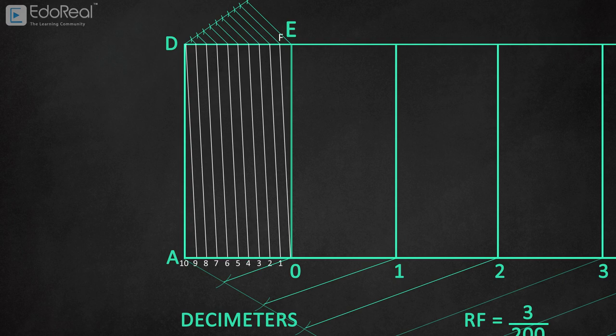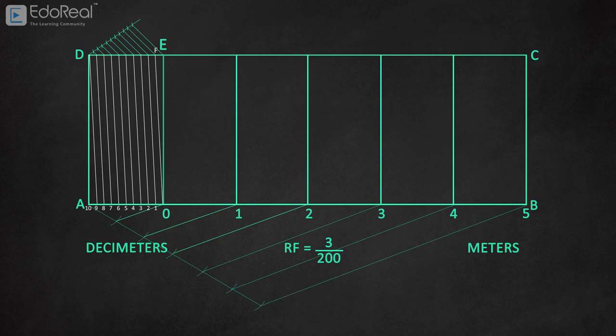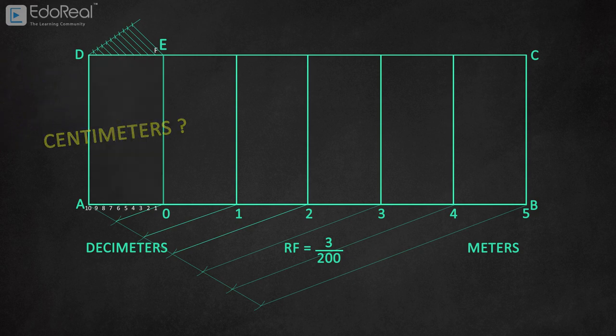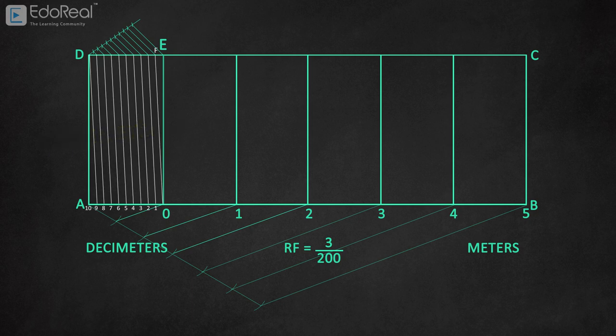Now we have completed showing main units and subunits, that is meters and decimeters. Then how do we represent the centimeters on the scale? Well, we may get a doubt that why we have joined the lines diagonally for subunits. There is a reason for that.